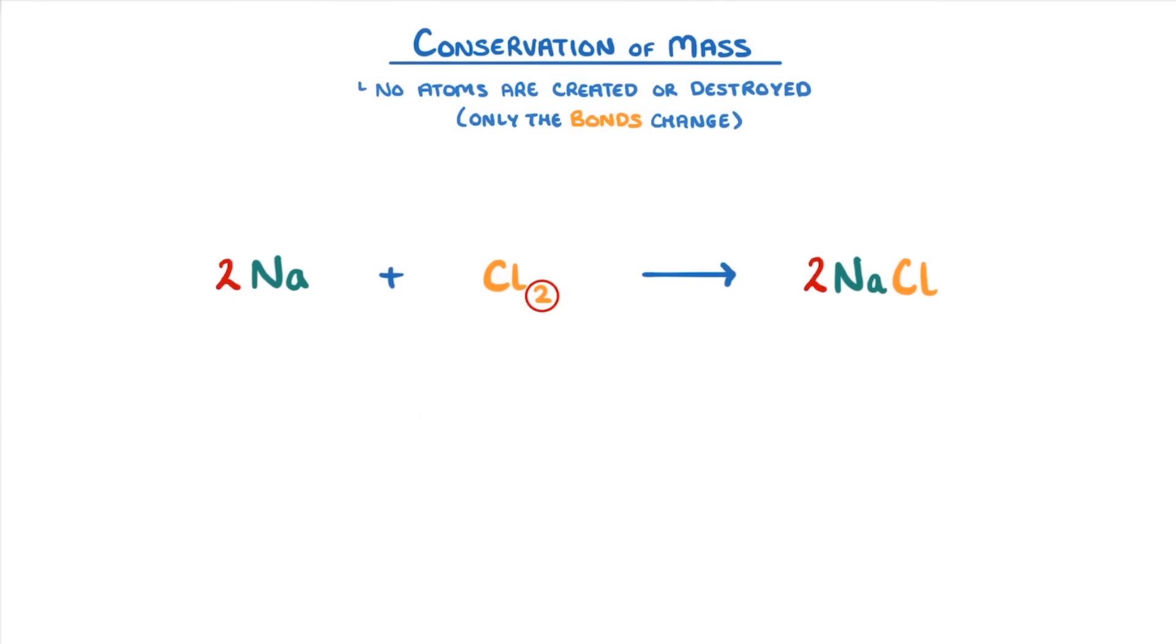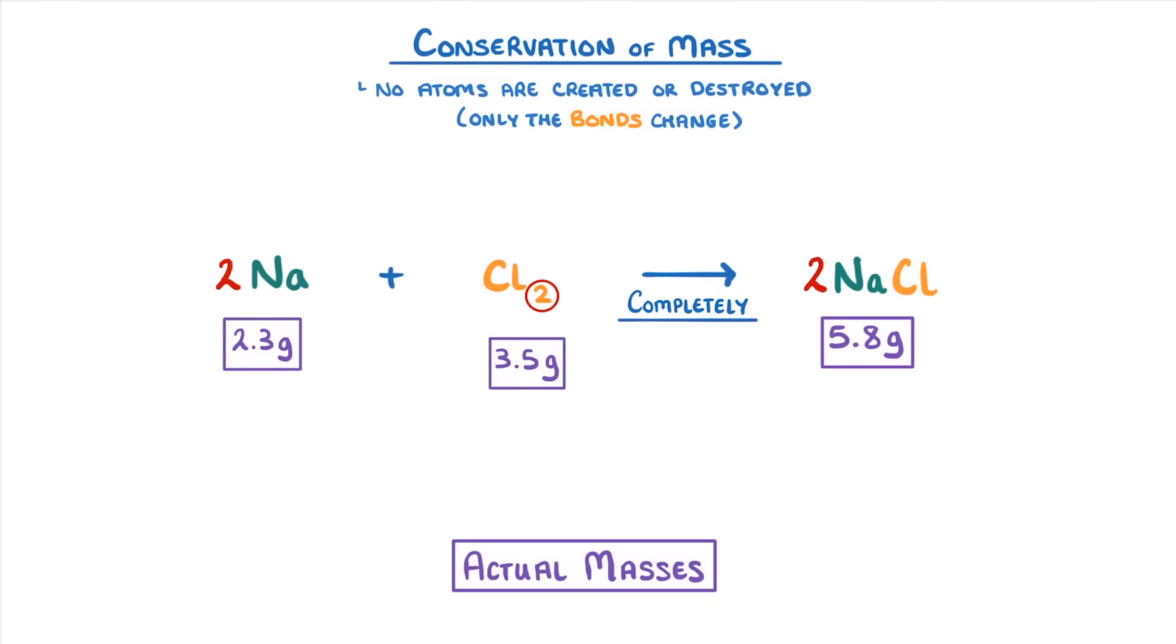Another way to think about it would be to look at the actual masses on each side. So if we reacted 2.3 grams of sodium with 3.5 grams of chlorine gas, then as long as they reacted together completely, we'd make 2.3 plus 3.5, so 5.8 grams of sodium chloride. So if we did our experiment on a set of scales, then the mass should stay the same throughout the entire reaction.